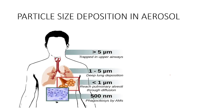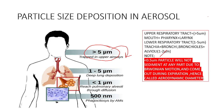Next, a very important topic: particle size distribution within aerosol products. Particles greater than 5 micrometers can be trapped in the upper areas — that is, the mouth, pharynx, and larynx. Particles greater than 5 micrometers are deposited in the mouth, pharynx, or larynx.